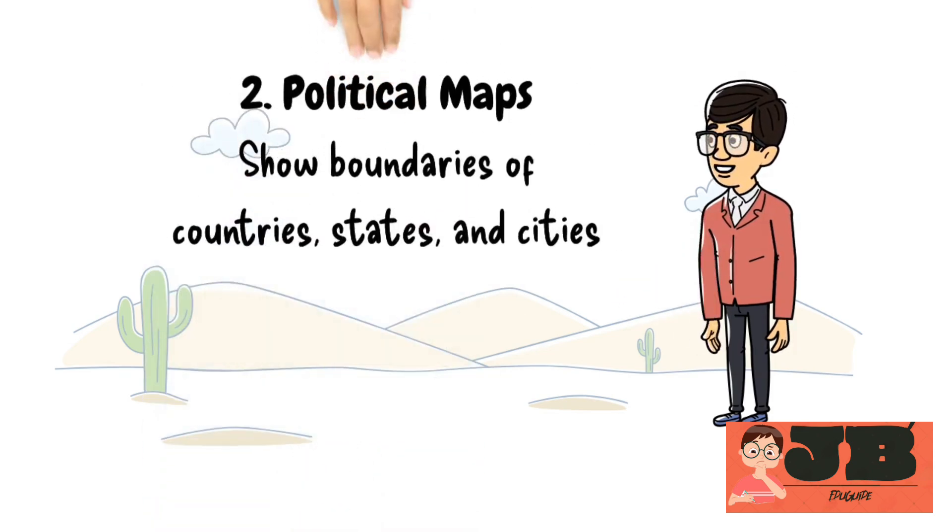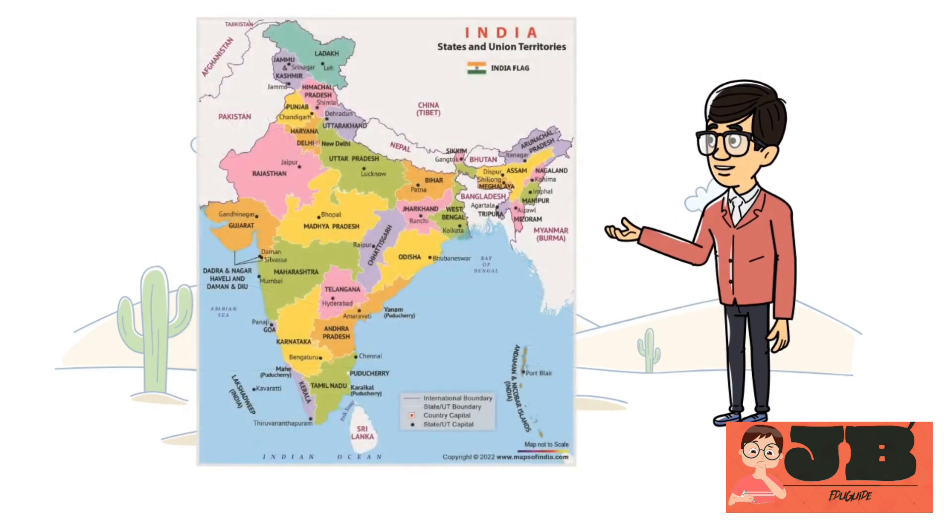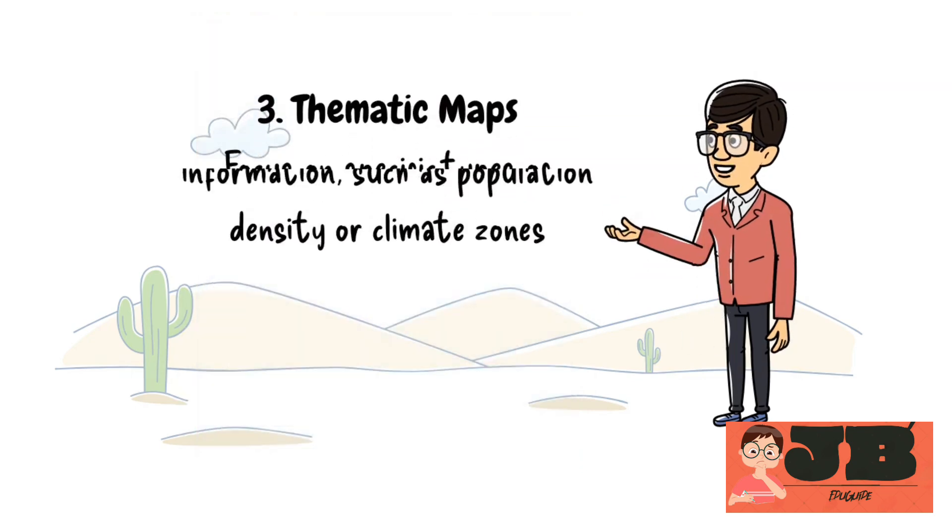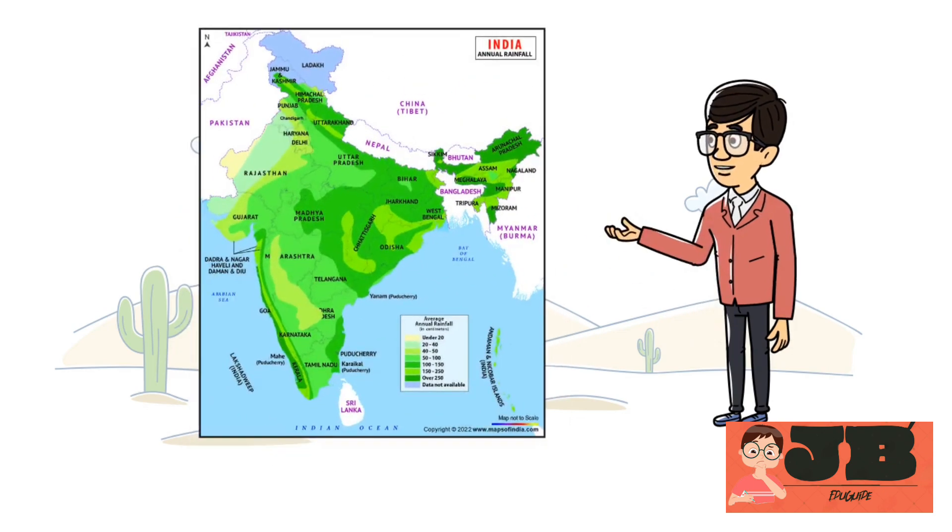Second, political map, which shows boundaries of countries, states, and cities. For example. Last type of map given in your textbook is thematic map, which focus on specific types of information, such as population density or climate zones. You can see the example.